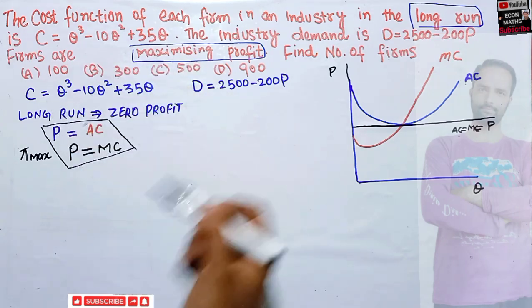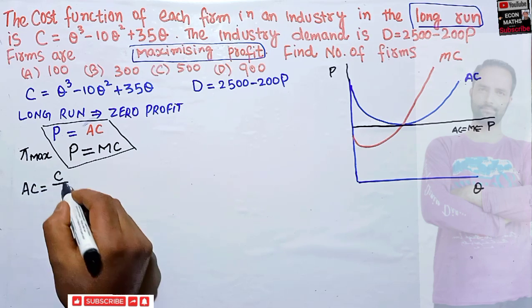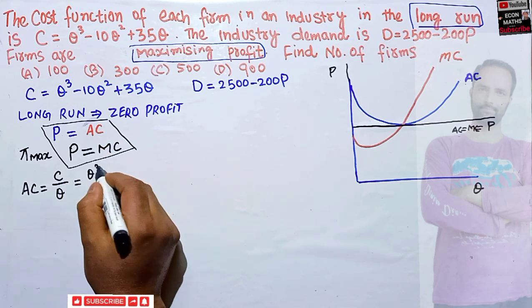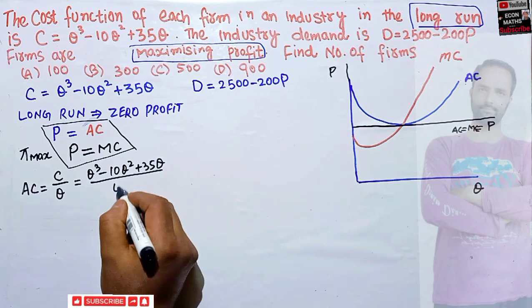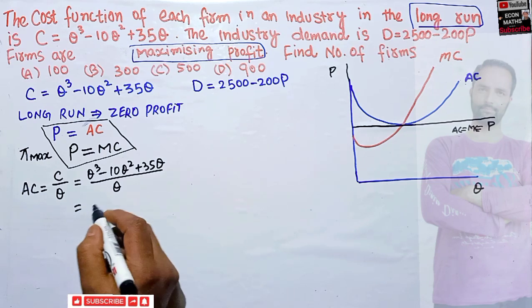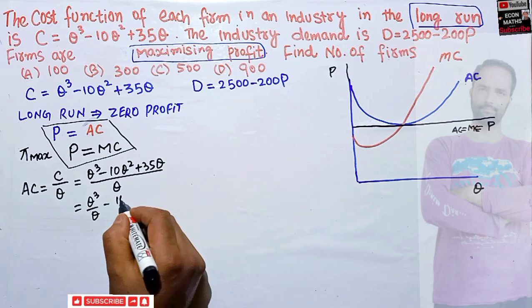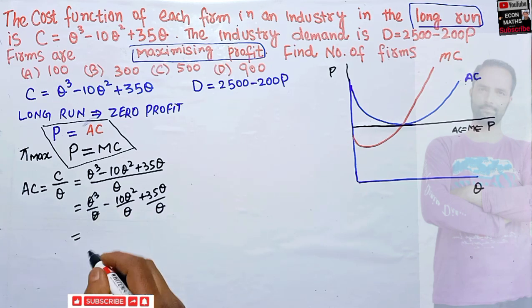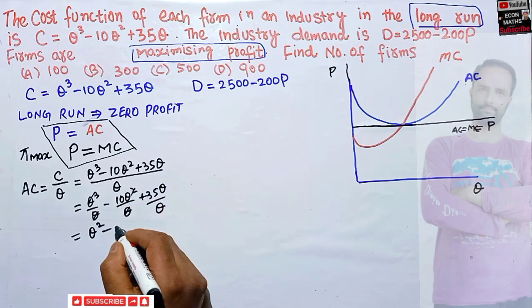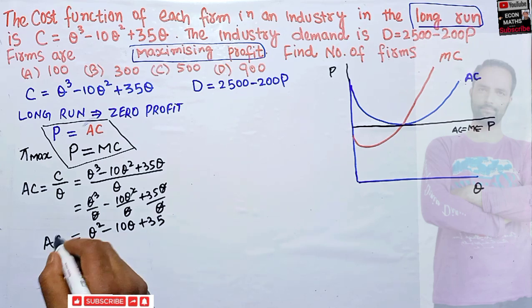Let's find the average cost. Average total cost is total cost divided by q. So AC = (q³ - 10q² + 35q) / q = q² - 10q + 35. Now, what is the marginal cost?